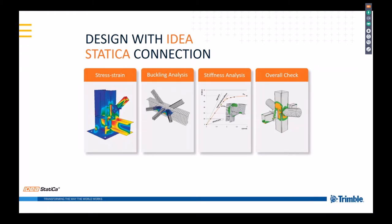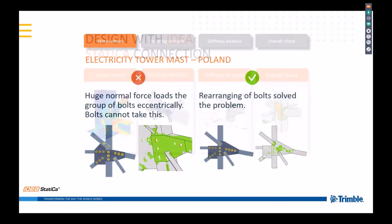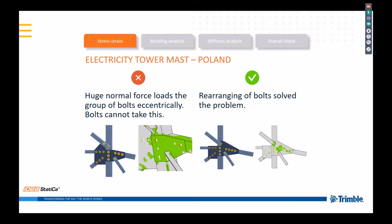The analysis usually starts to get the stress-strain diagram of the joint. Buckling stiffness is also typically required. Looking at examples: this is a complex joint in an electricity tower mast with a seemingly suspicious topology of bolts. If we do not understand the joint, we can get the wrong topology — displayed by red indications showing the bolts are overpressurized and the design is not safe. If we understand this, we can rearrange the bolts, check again, and come up with a safe design.